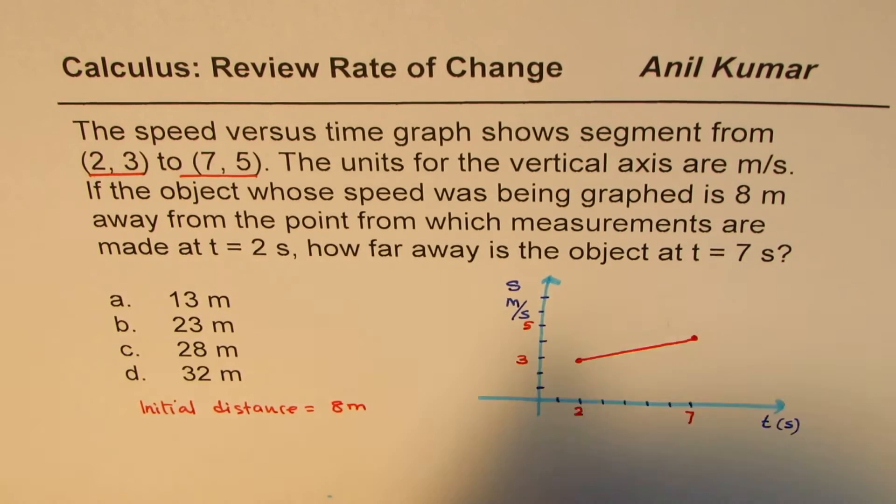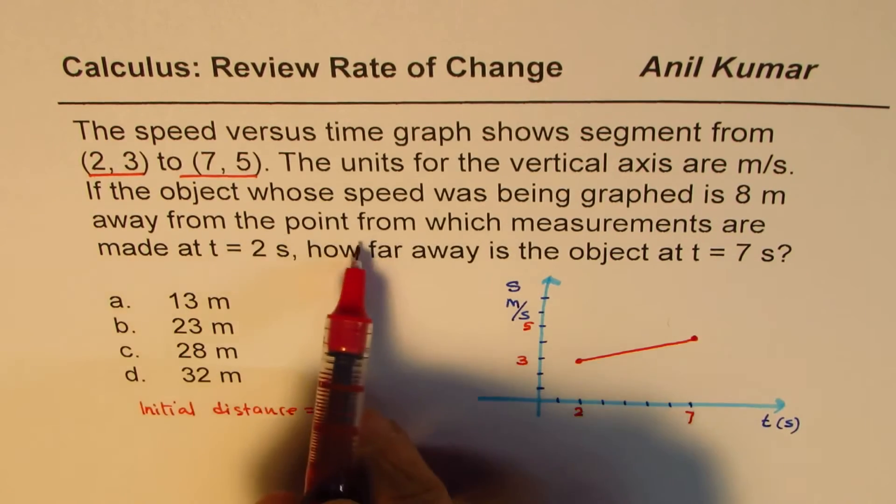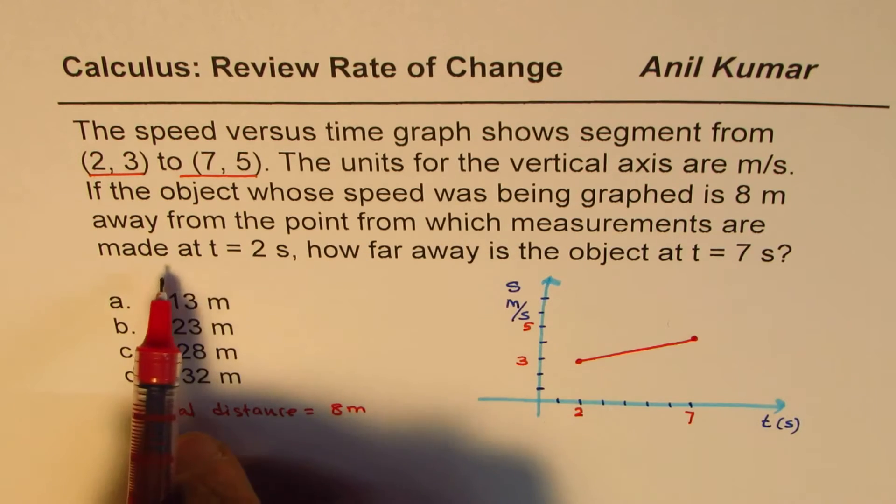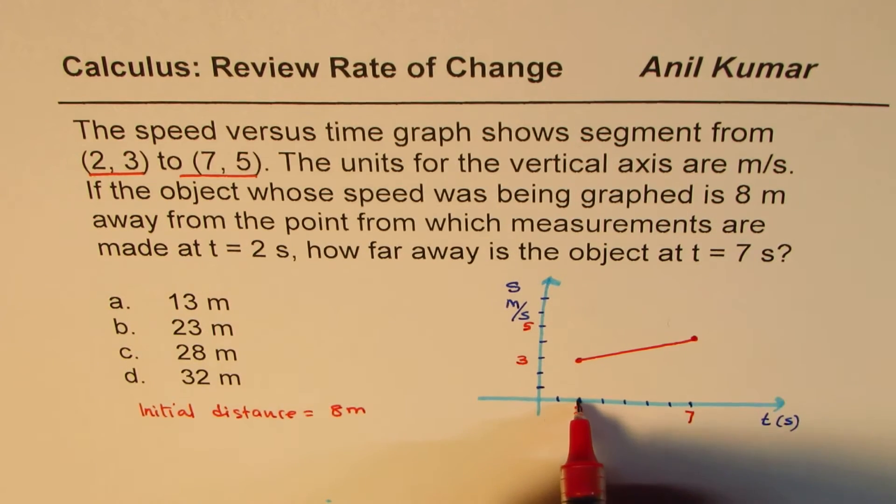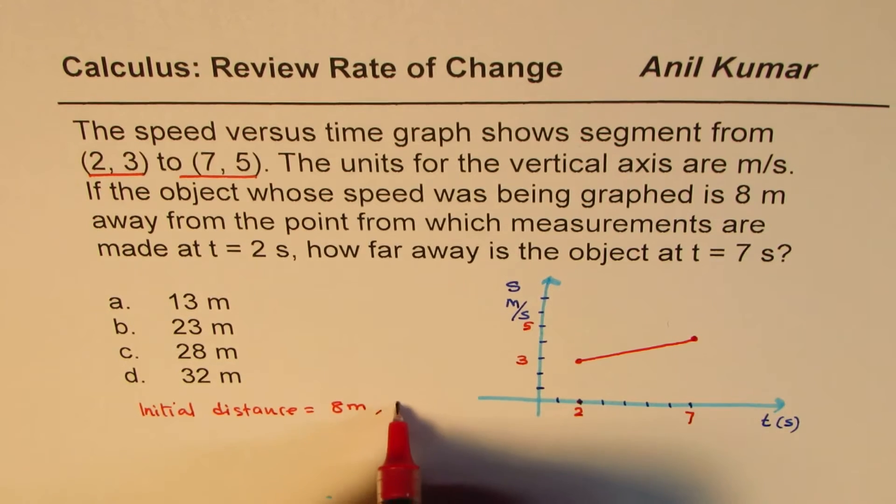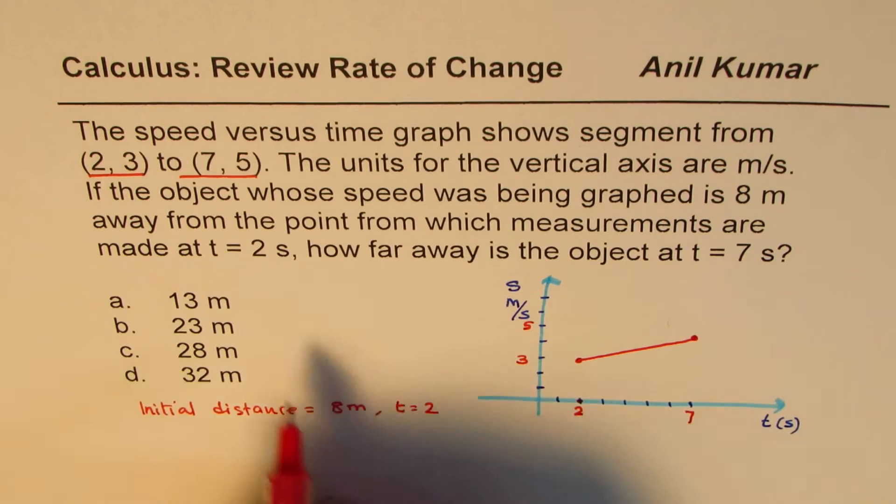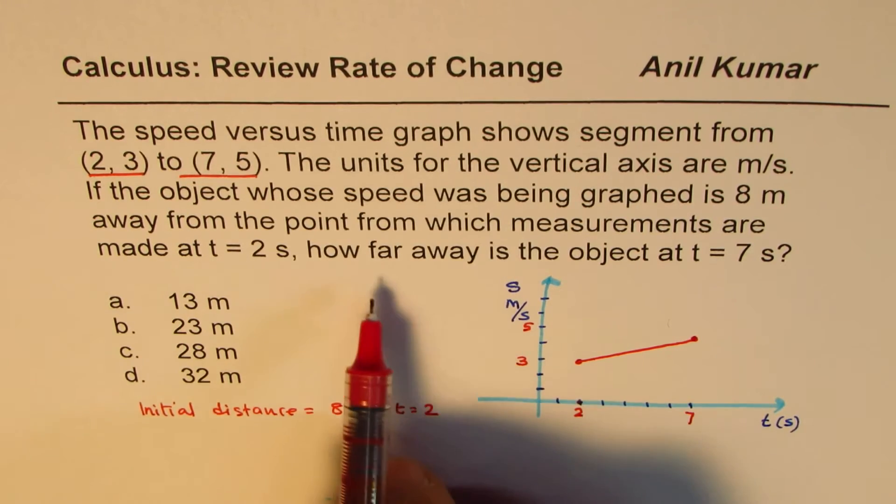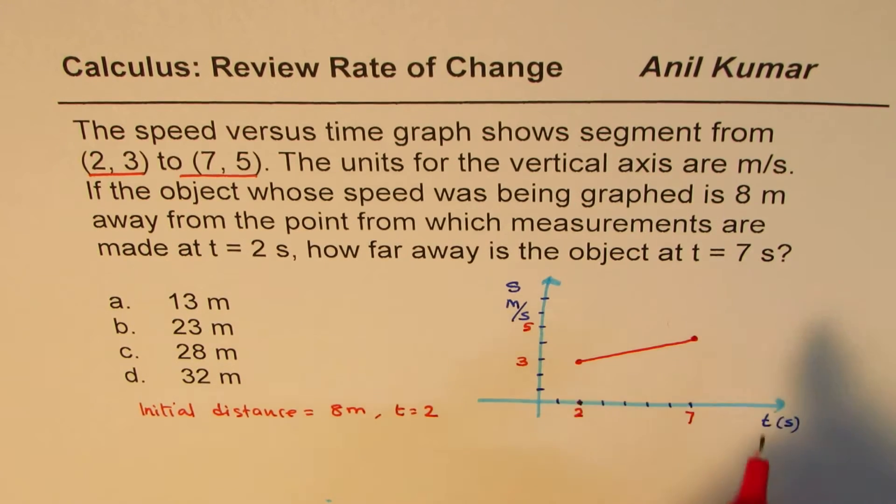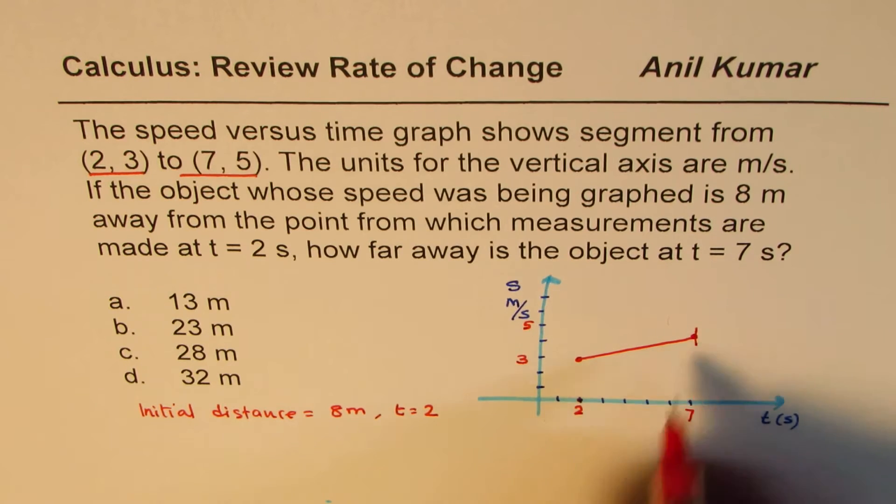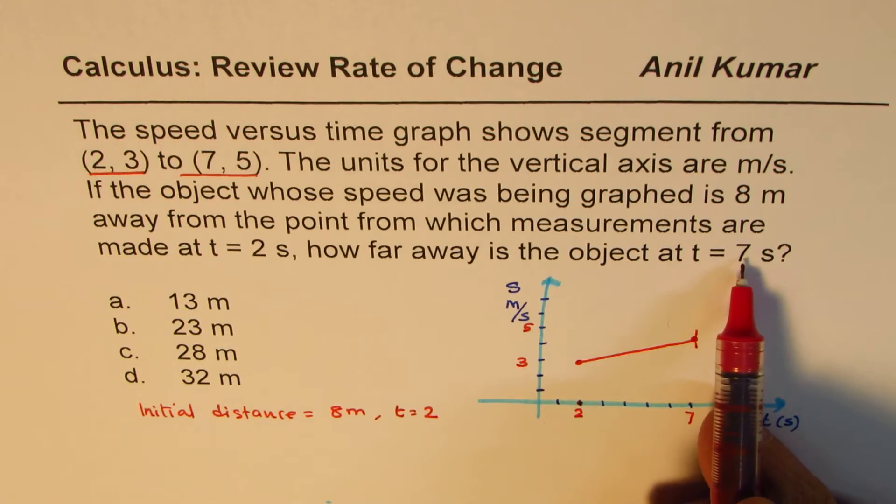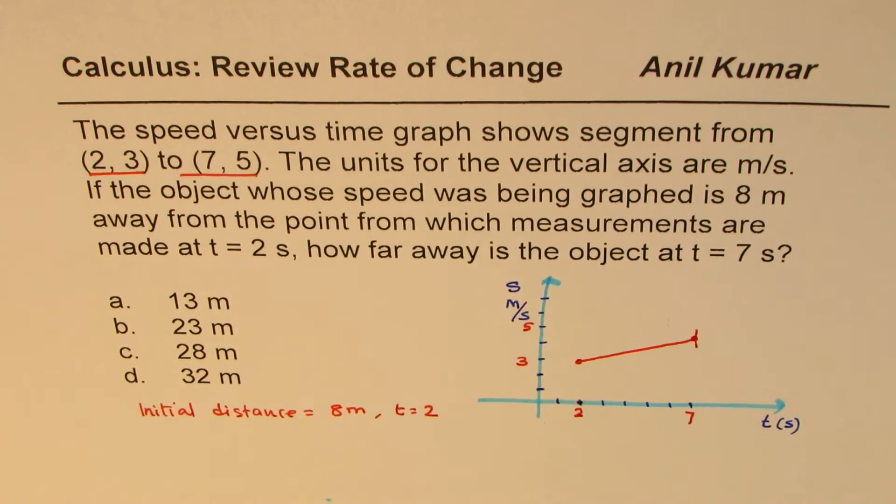The distance equals 8 meters away from the point from which the measurements are made at t equals 2 seconds. So at this time, the object is 8 meters away from the point from where the measurements are being taken. How far away is the object at t equals 7? We have to find the distance of the object at t equals 7. Clearly, the distance here is initial distance plus the distance moved.